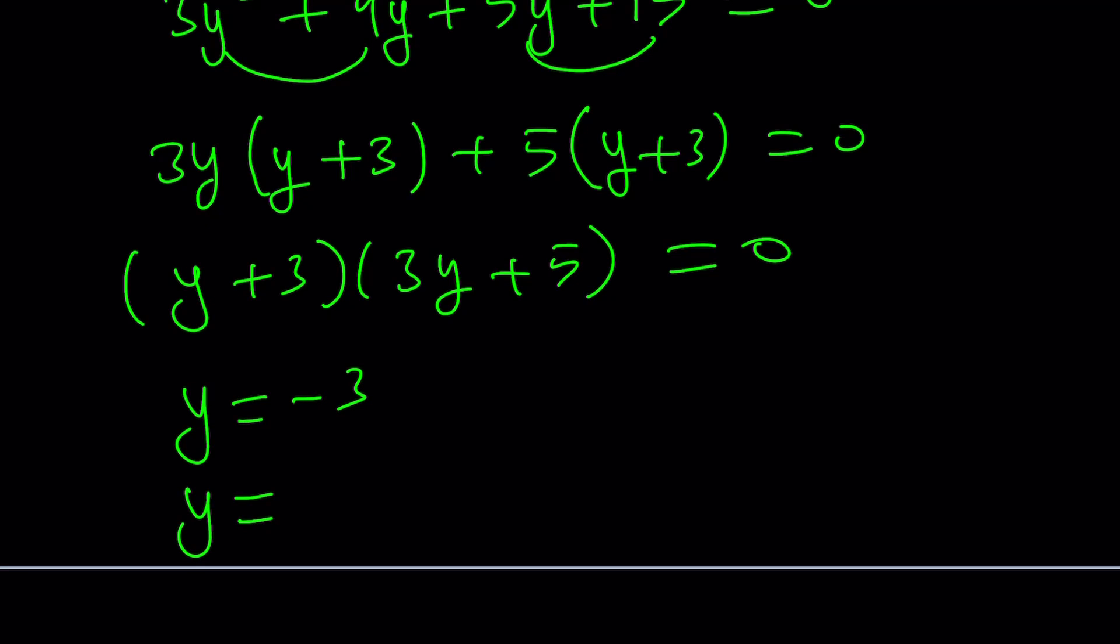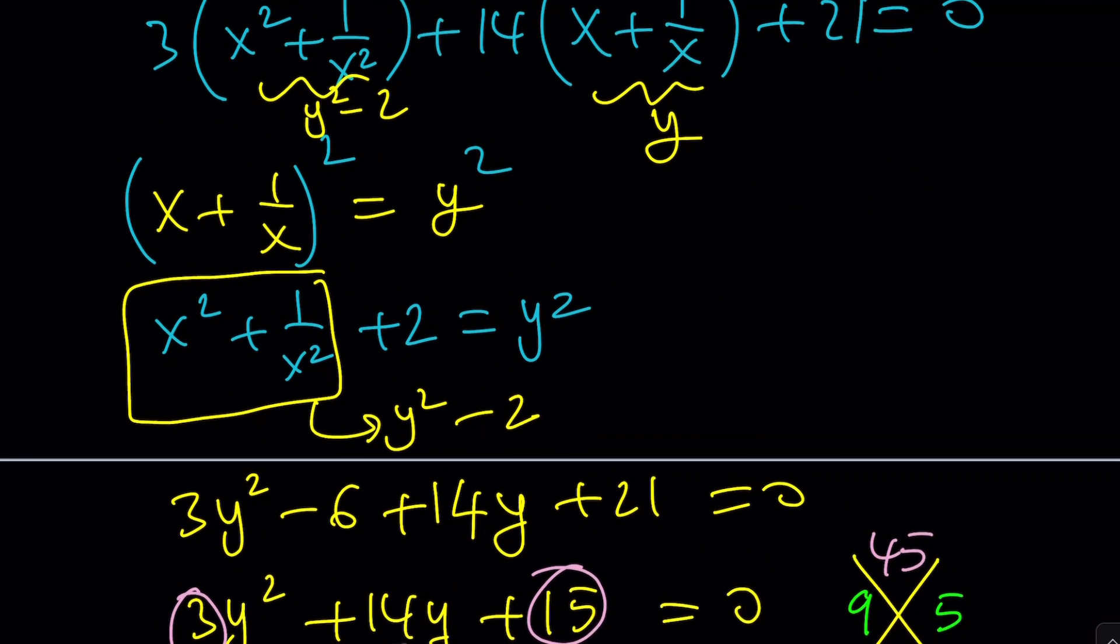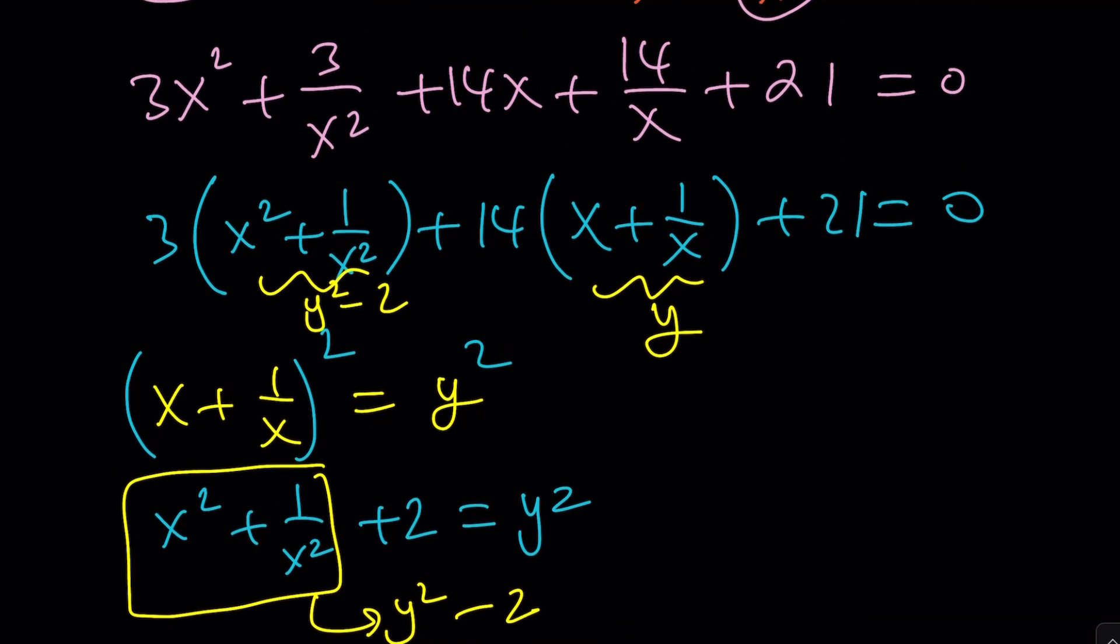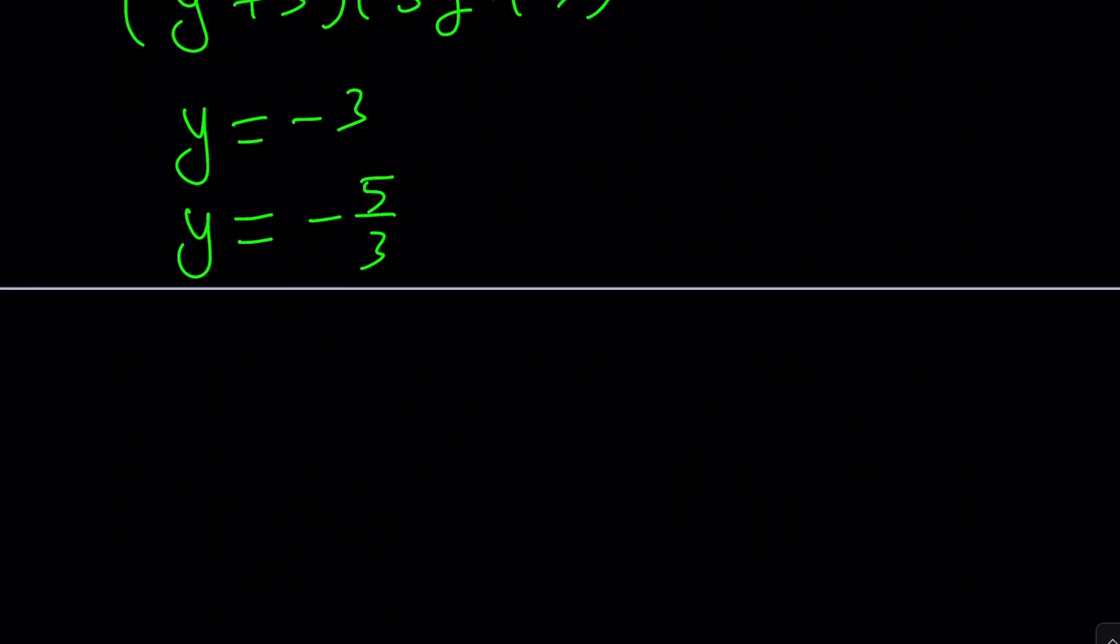But we get negative 3 and negative 5 thirds as solutions. But what is y? Let's go ahead and back substitute. y is x plus 1 over x, right? So, let's go ahead and replace y with x plus 1 over x in both places. And we should be able to solve for x from here.